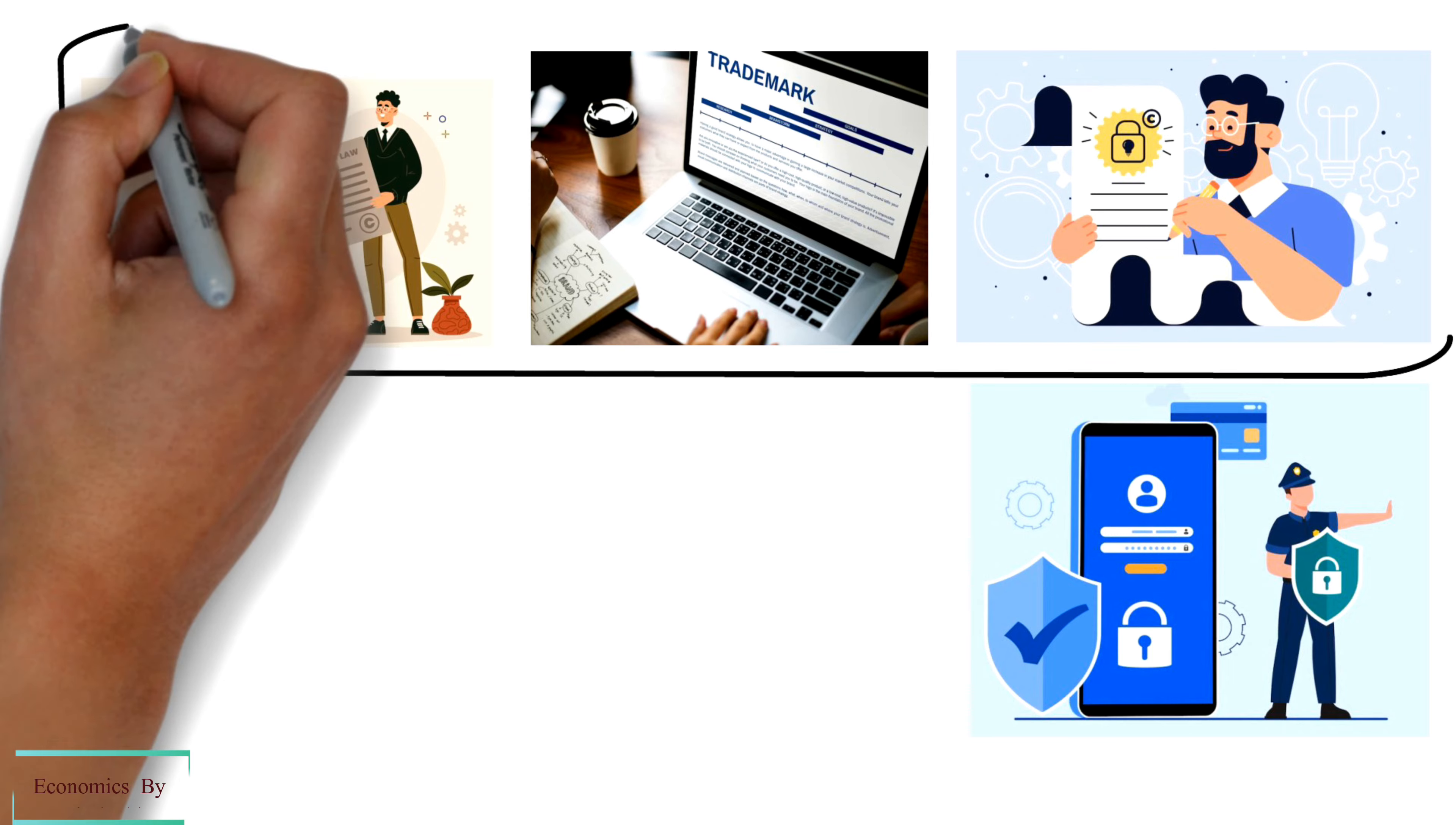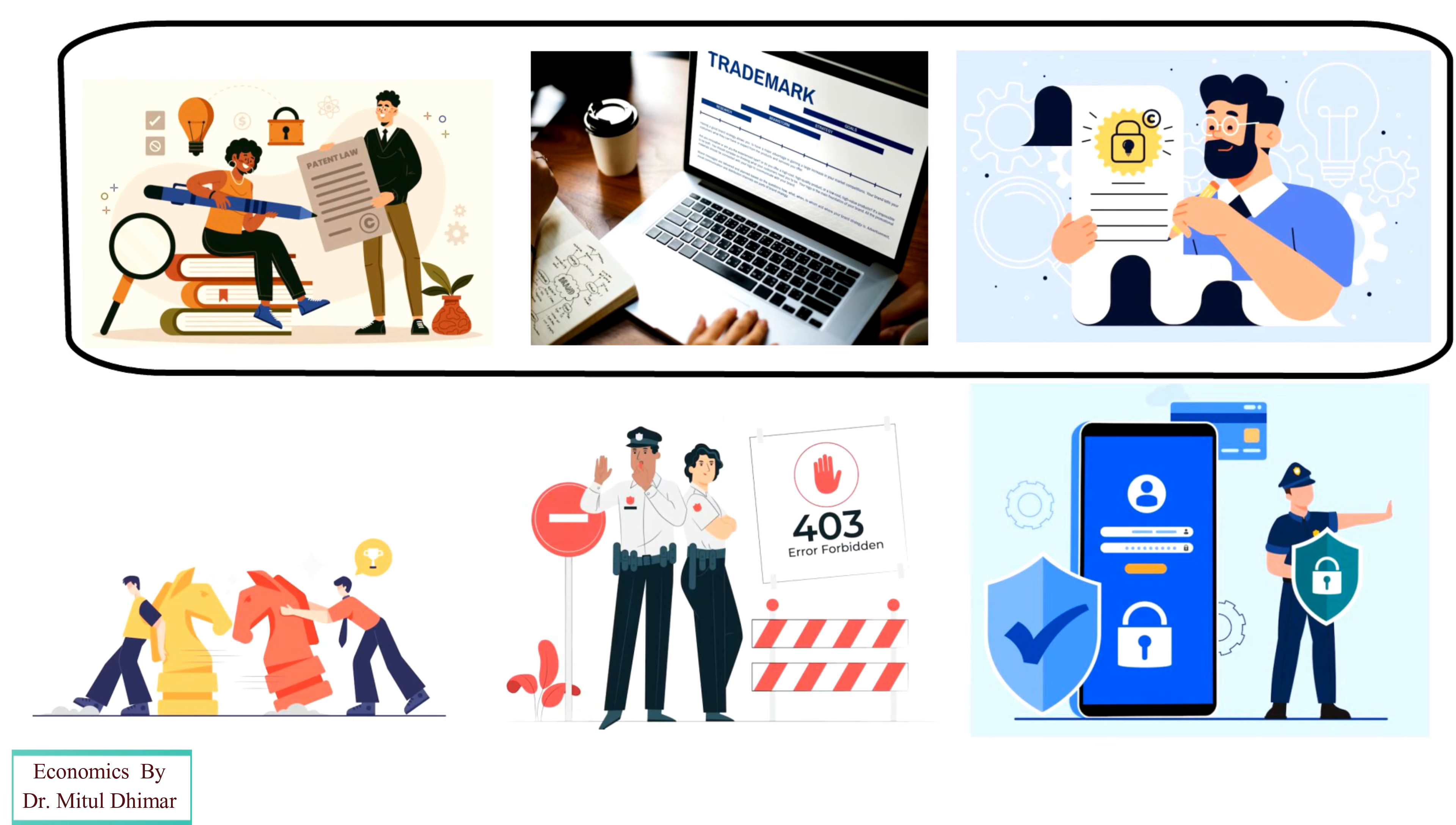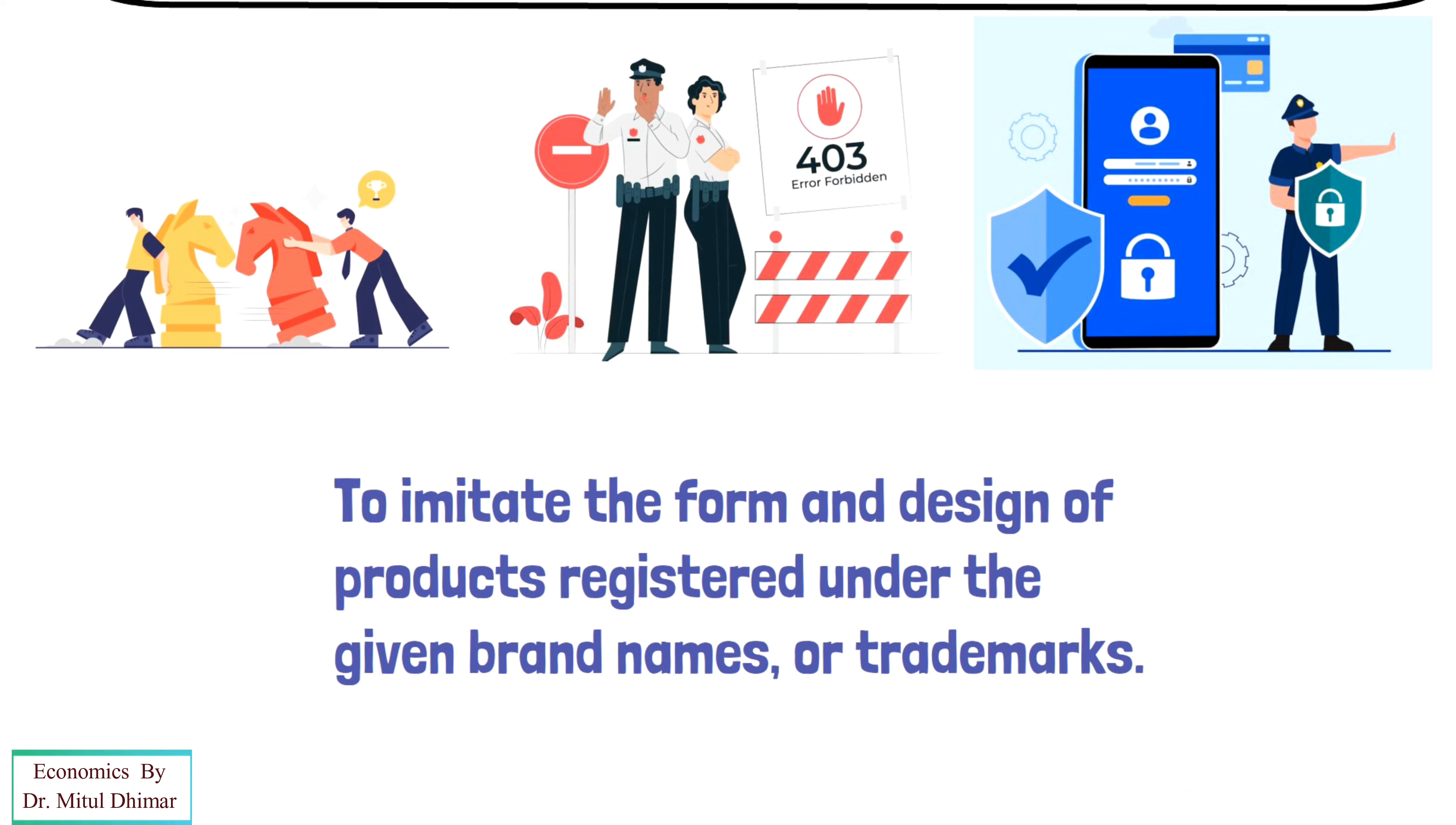Once copyright protection or trademark protection is available, the law forbids potential competitors to imitate the form and design of products registered under the given brand names or trademarks.